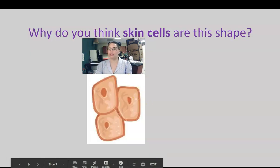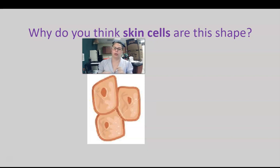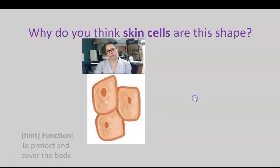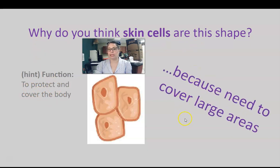Why do you think skin cells are this shape? They're very big — skin cells are some of the biggest cells that we have in our body. Here's a hint: they have to protect and cover our whole body. So why do you think skin cells are the shape that they are? Because they need to cover a large area.